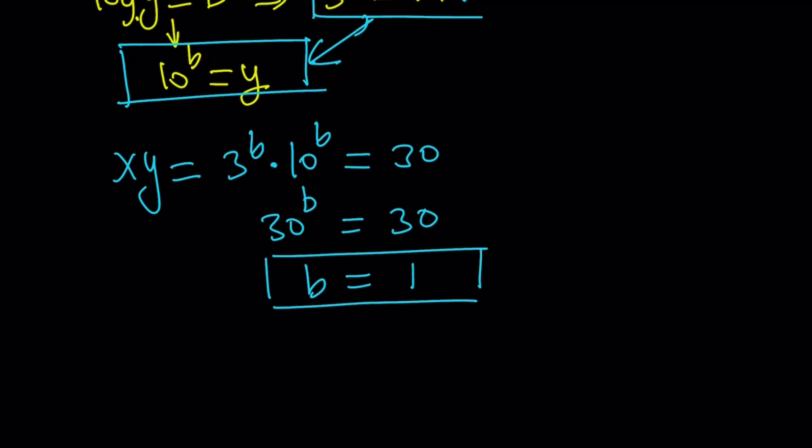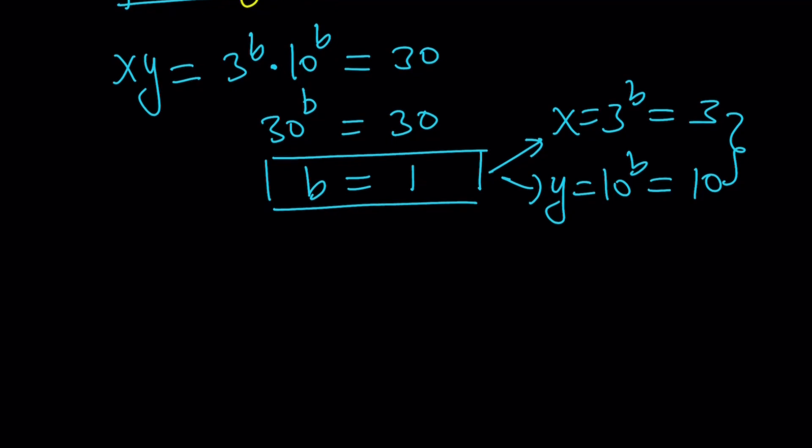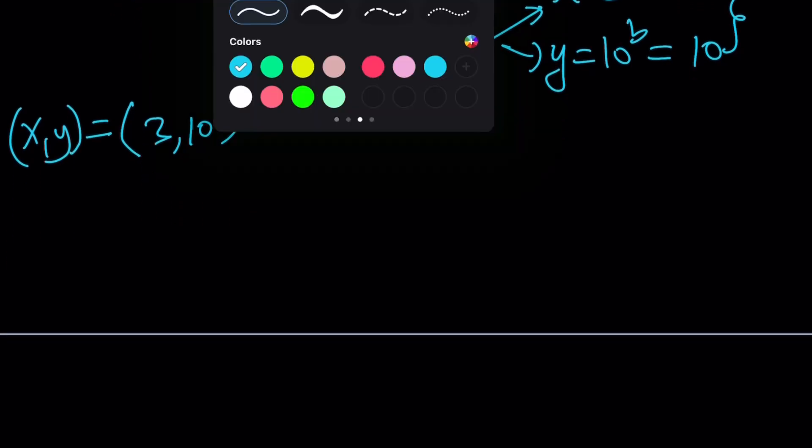But b equals 1. b is not what we're looking for. b is just kind of like a dummy variable. x is 3 to the power b. So, it's going to be 3 then. And y is 10 to the b. How do you find y? Just like substitution, 10 to the power b. And since b is 1, y is 10. You could also find the y from the second equation because x, y is 30. Their product is 30. If you know one of the numbers whose product is 30, then you know the other number. So, we got 3, 10 for x, y. That's the first method. Let's take a look at the second method.